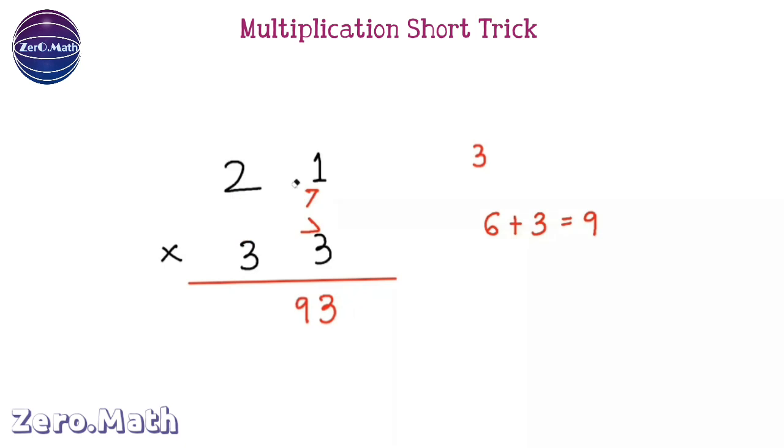In the last step, we have to multiply the unit digit, 2 into 3. 2 into 3, we are getting 6. So simply we can write 6 here. What is our answer? Our answer is 693.